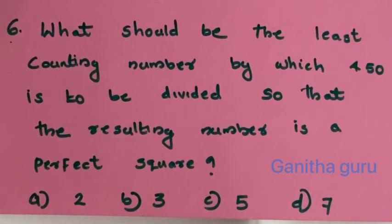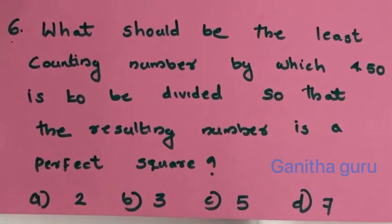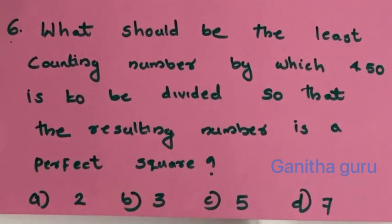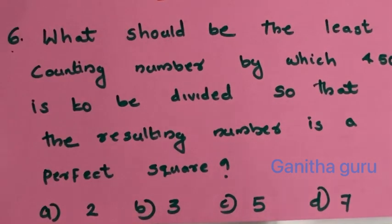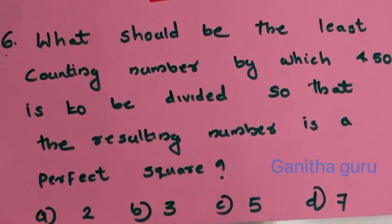Next question: what should be the least counting number by which 450 is to be divided so that the resulting number is a perfect square? Let's see which number divides 450 to give a perfect square.